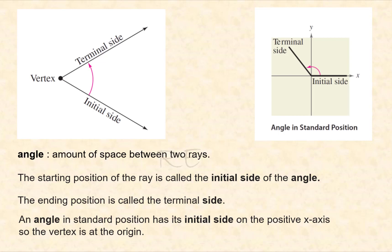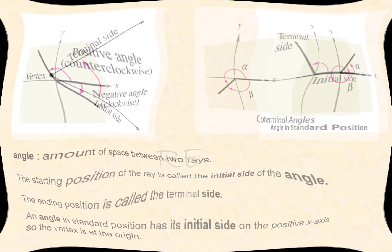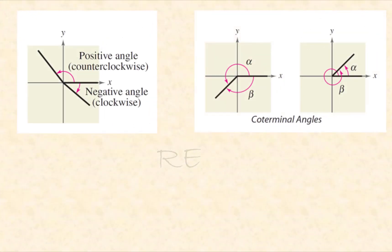An angle is said to be in standard position when its initial side is on the positive x-axis and its vertex at the origin. Its terminal side may fall anywhere in those four quadrants.